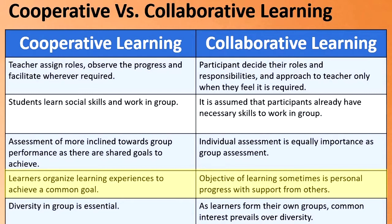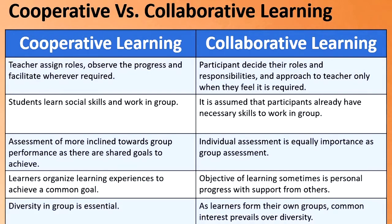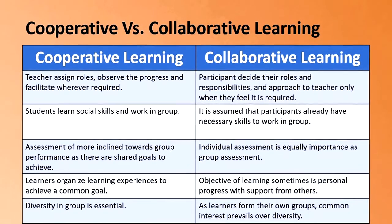In cooperative learning, learners organize learning experiences to achieve a common goal. In collaborative learning, the objective is sometimes personal progress with the support of others — a learner lacking skills can take help of a peer and progress personally. In cooperative learning, diversity is essential because the teacher frames the groups, but in collaborative learning, participants form the groups themselves, so common interests often prevail over diversity. These are the key differences between cooperative and collaborative learning.